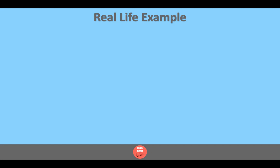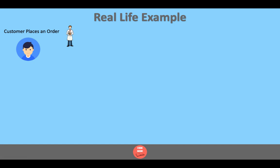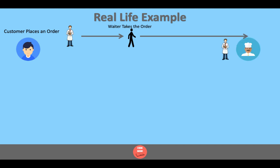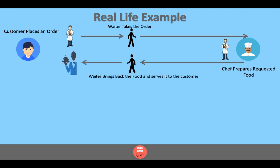Here is a real-life example you can compare to an API. You are in a restaurant and a waiter appears with a menu. You place an order from the menu to the waiter, then the waiter rushes to the kitchen and tells the chef what to prepare. The chef cooks the food, and then the waiter brings the cooked food back to the customer. So the unsung hero here is the waiter.